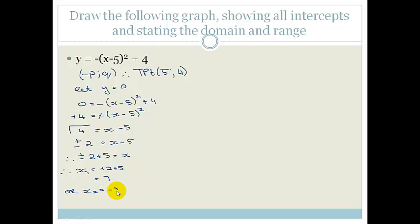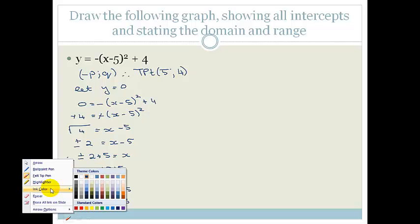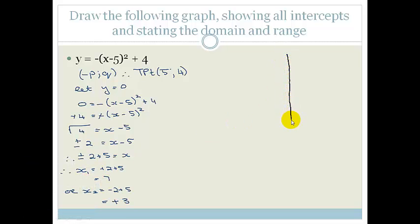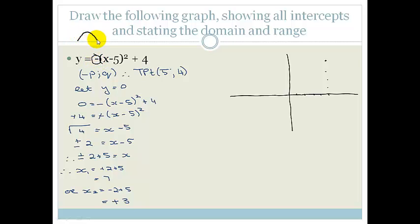Therefore x = ±2 + 5, giving x₁ = 2 + 5 = 7 or x₂ = −2 + 5 = 3. Drawing this graph: the turning point is at (5, 4), and since a is negative it's a sad graph. The x-intercepts are at x = 7 and x = 3.